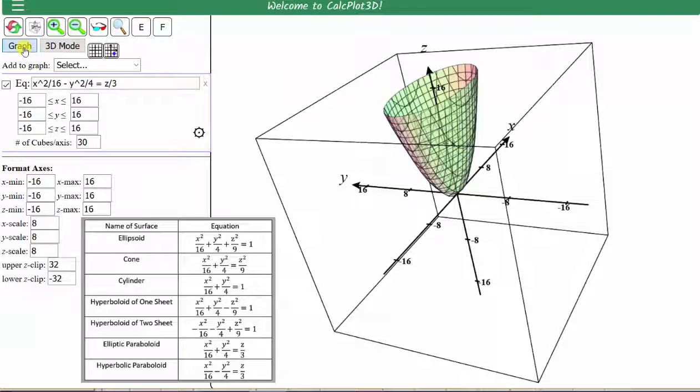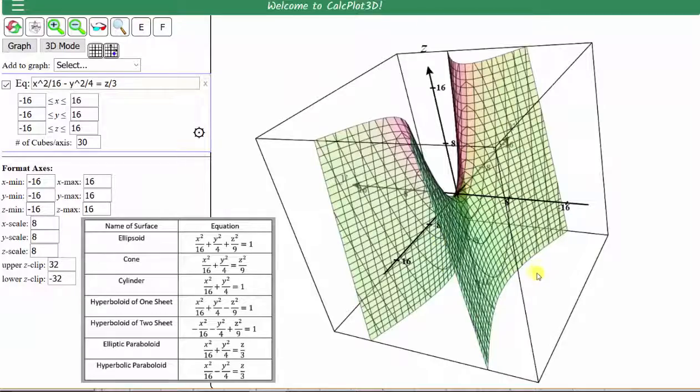We've made the changes. Click graph. And now we have the hyperbolic paraboloid.